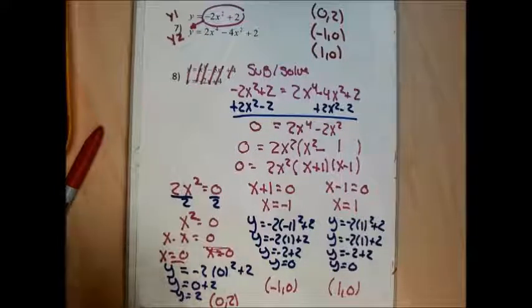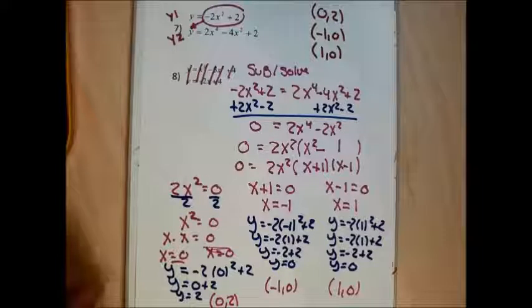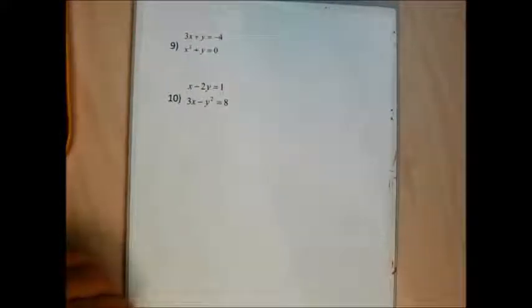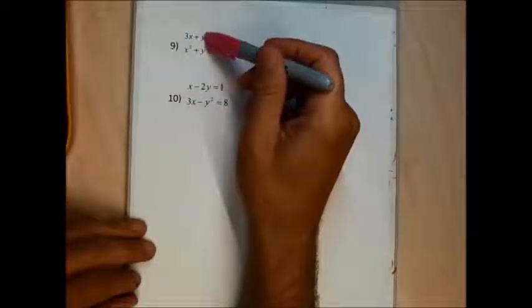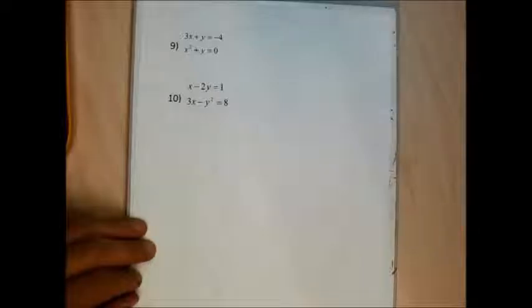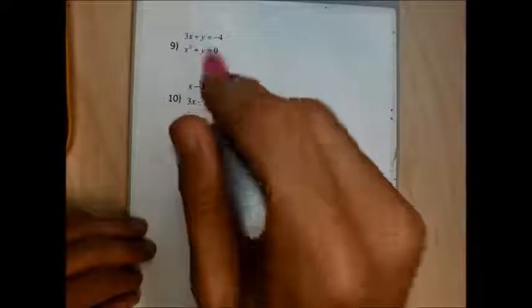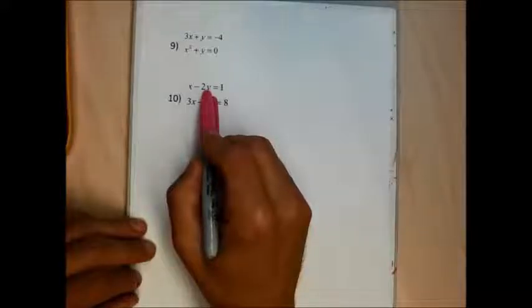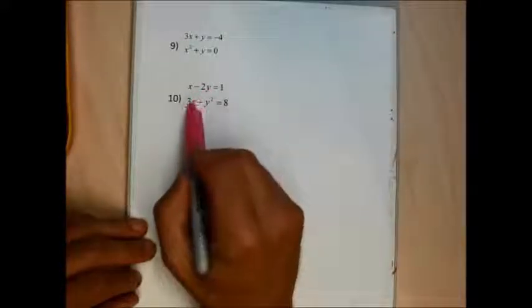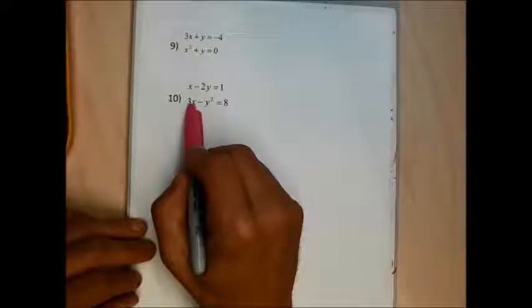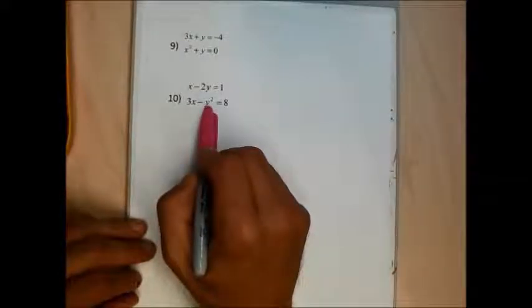Problem 7 wasn't as bad as I thought it would be. For problem 9, the easiest approach is to solve either the top or bottom for y — both will give the same answers. For problem 10, I wouldn't solve the top for y because dividing by 2 creates fractions, wouldn't solve the bottom for x because dividing by 3 creates fractions, and wouldn't solve the bottom for y because that requires square rooting. So my first step in number 10 is to solve the top for x.